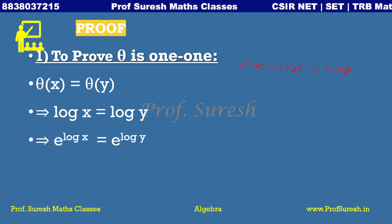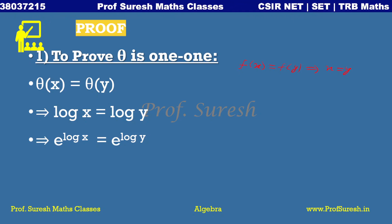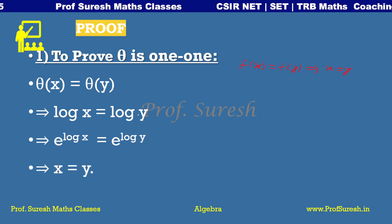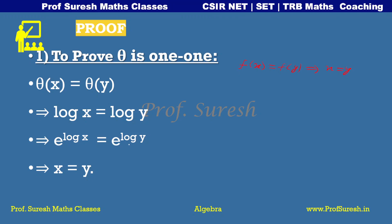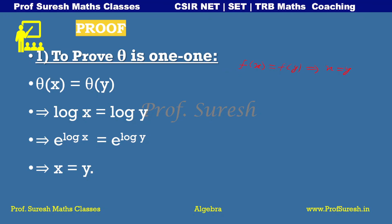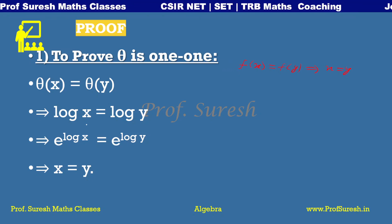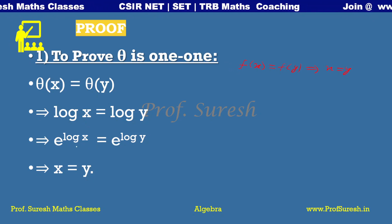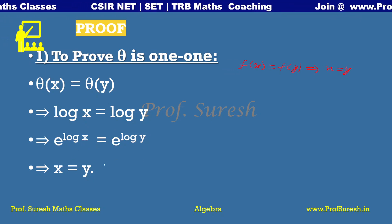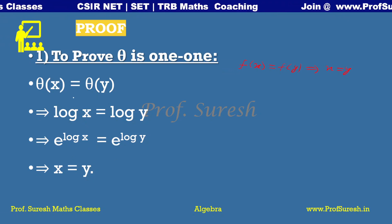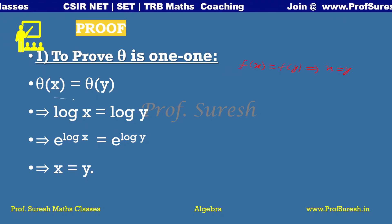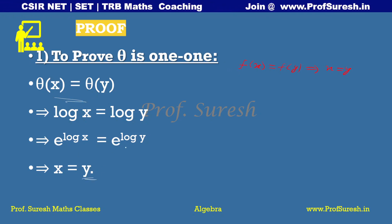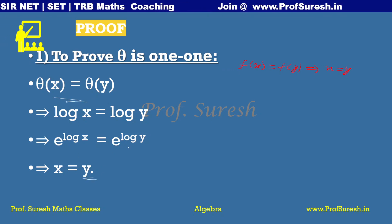...e to the power log x equals e to the power log y, which gives x equals y. Therefore, theta of x equals theta of y implies x equals y, so theta is one-to-one.